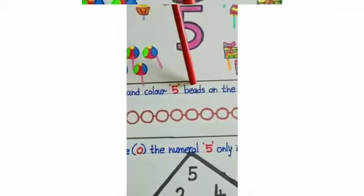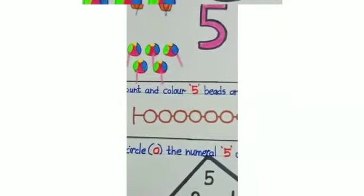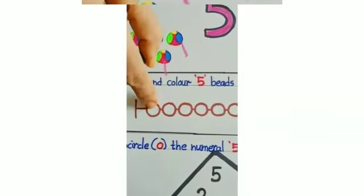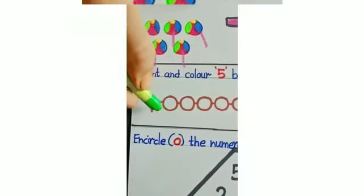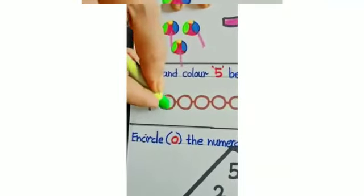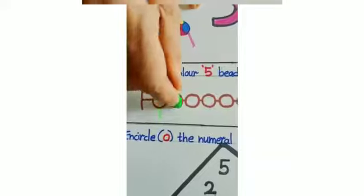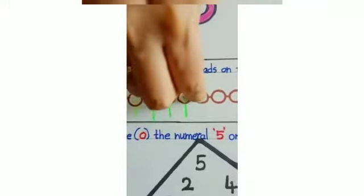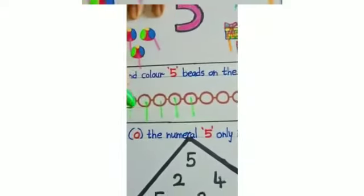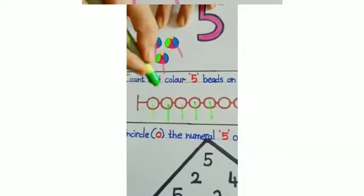Okay, count and color 5 beads on the given abacus. Now children, what you have to do? You have to cut the 5 beads only. So ready children? Start counting with me, only 5 beads. 1, 2, 3, 4, and 5. Now stop here. Okay children, only 5 beads.